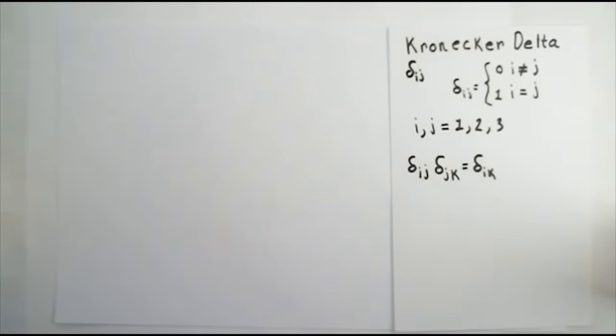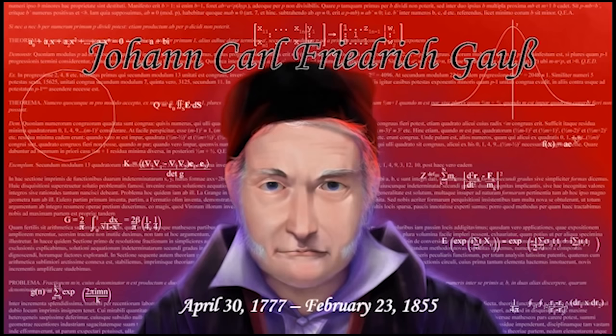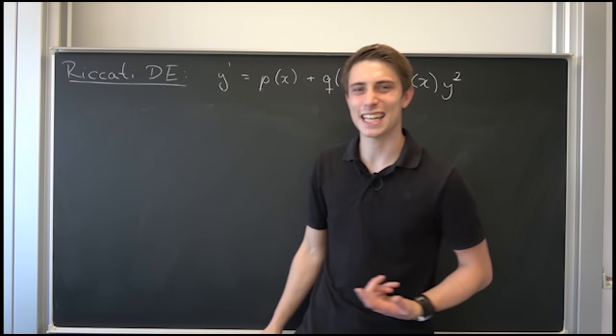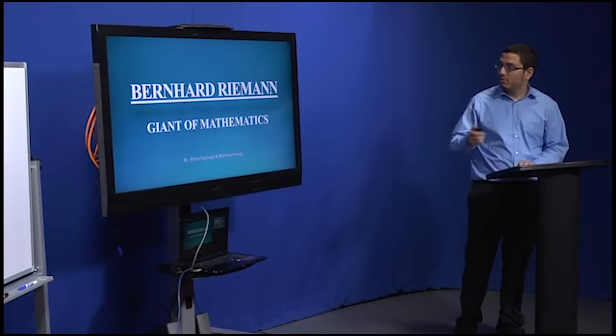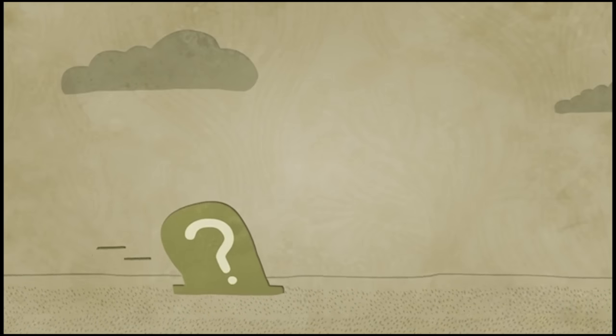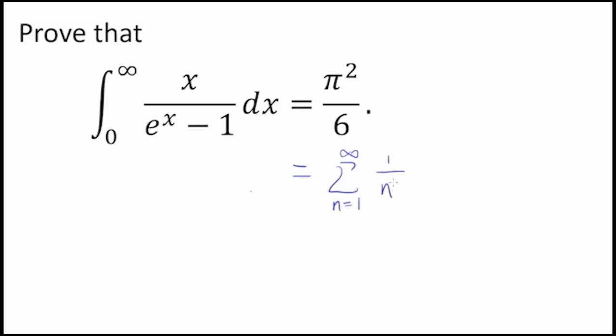A mathematician called Karl Weierstrass, the Kronecker Delta, Johann Karl Friedrich Gauss, the Hilbert Space, Bernard Riemann, the Heisenberg Uncertainty Principle, and Euler.